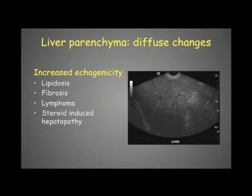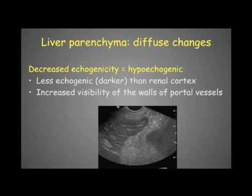Lipidosis, lymphoma, and steroid-induced hepatopathy are typically associated with increased liver size as well. In contrast, chronic hepatitis is expected to show a decreased liver size. We can also see diffuse decreased ecogenicity of the liver parenchyma — the liver appears darker than the renal cortex.